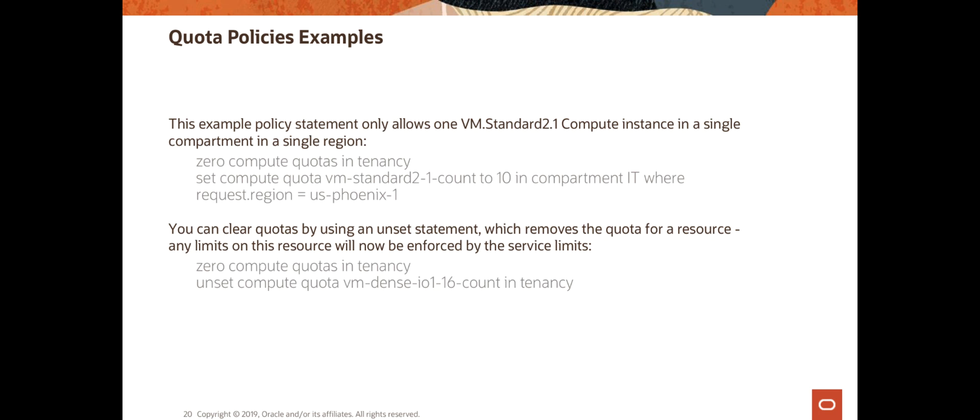In terms of precedence, if there is more than one policy for the same resource, the most restrictive policy is actually applied. And the service limits always take precedence over quotas. Although it is possible to specify a quota for a resource that exceeds the service limit for that resource, it does not really mean anything — the service limit is still going to be enforced.